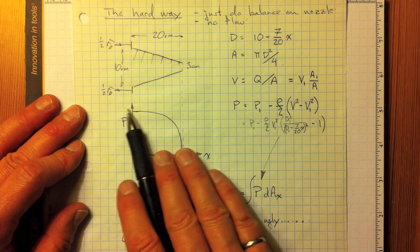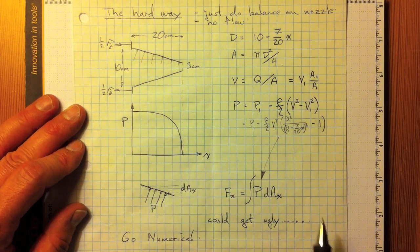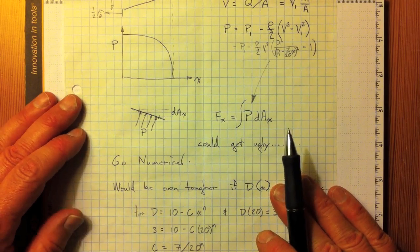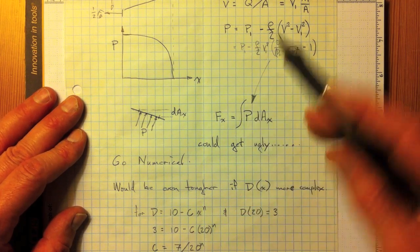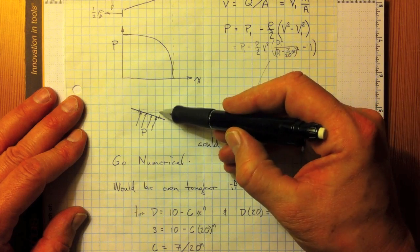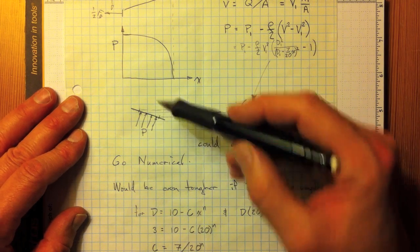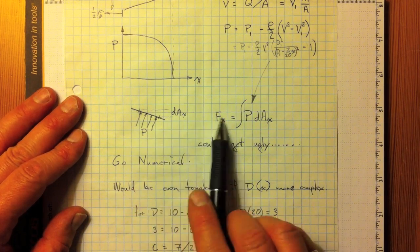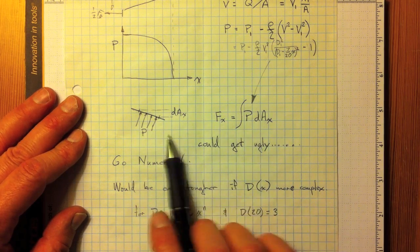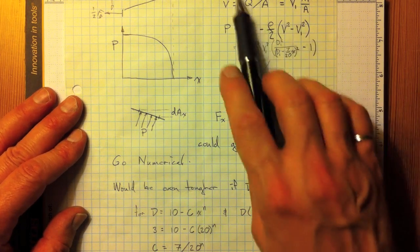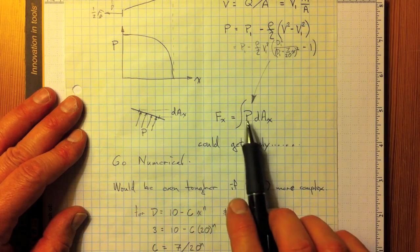And, if we follow that through, we'll get a relationship like this. If we want to know the x force is acting, we'll have to integrate that pressure over the projected area, dAx, to get the component that's acting in the x direction. And, doing that analysis could get a little ugly with these fairly complex relationships for the pressure.